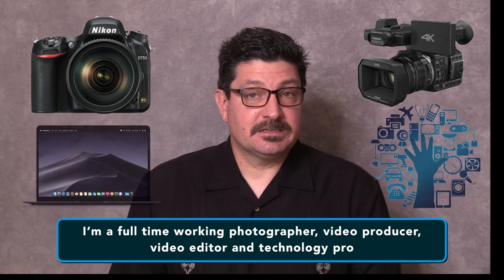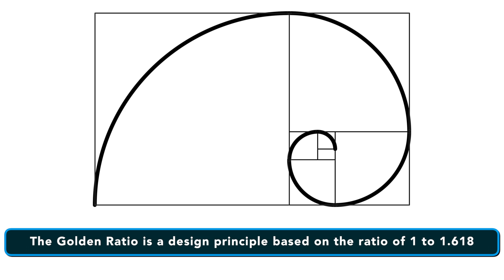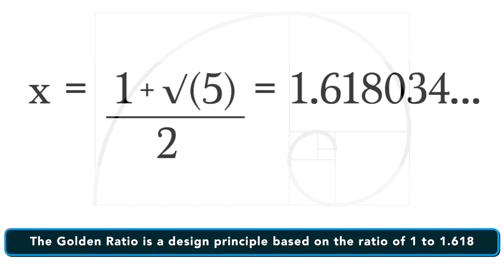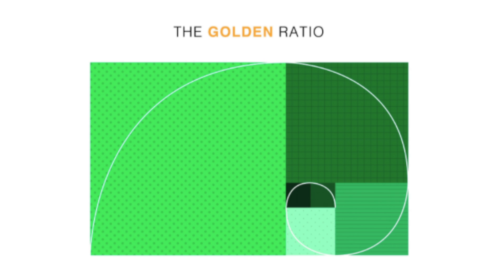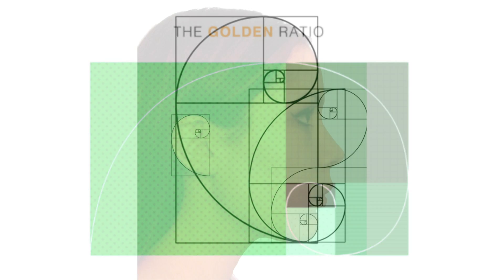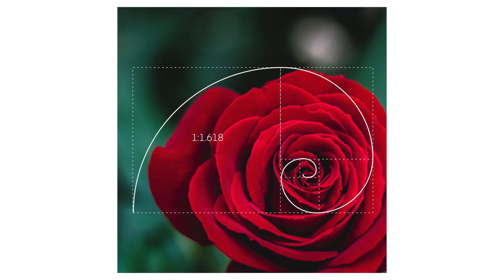The Golden Ratio has been used as a powerful composition tool for centuries. It's a design principle based on the ratio of 1 to 1.618. Hailed as the perfect number, the Golden Ratio can assist in creating images or scenes that have a strong composition which will attract viewers to your photographs or the scenes that you shoot.